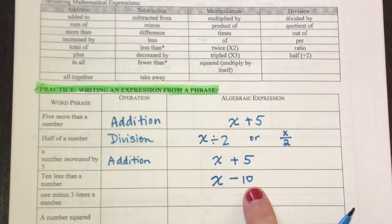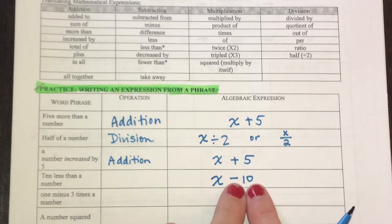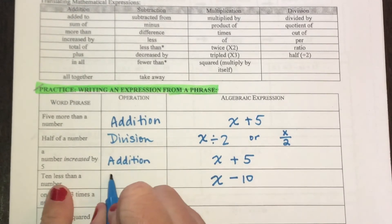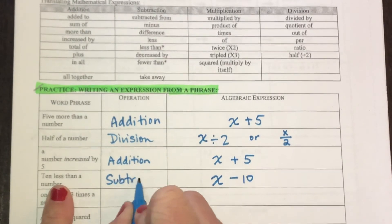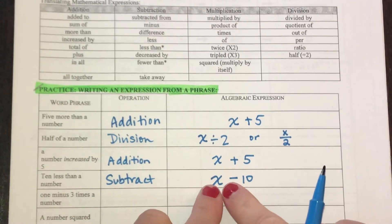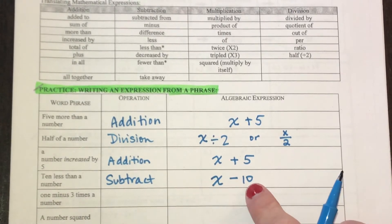Because if you have 10 less than me, then you're going to be subtracting 10 from some unknown. So less than is going to be a subtract sign. And you're going to take less than something, I don't know what that is. So my variable X and 10 less than that.